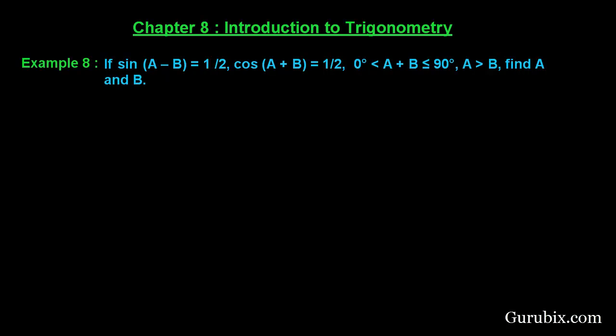Welcome friend, let us solve question example number 8 of chapter 8. The example says if sin(A - B) is 1/2 and cos(A + B) equals 1/2, where 0° < A + B ≤ 90°, and A > B, find A and B. This is a very interesting question, let us solve it.